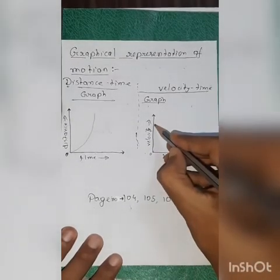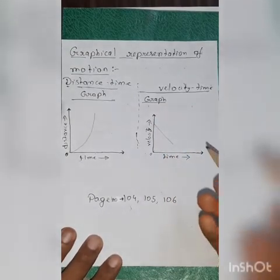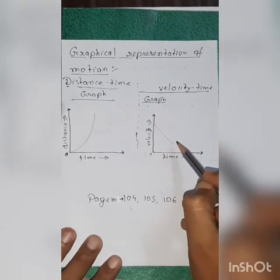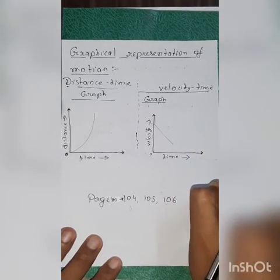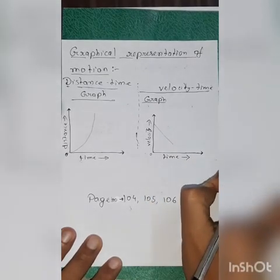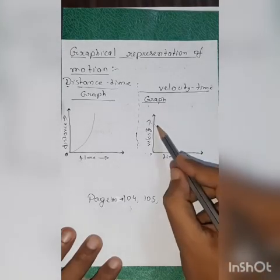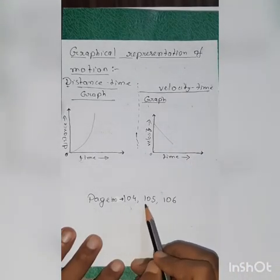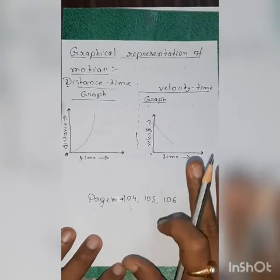In the next case, the velocity-time graph is pointing downwards. That means here the final velocity is less than the initial velocity, so the value of acceleration will be negative. We all know that if the value of acceleration is negative, we call it retardation. So the graph of retardation will look like this. You can refer to book page numbers 104, 105, and 106 for the diagram of the graphs.